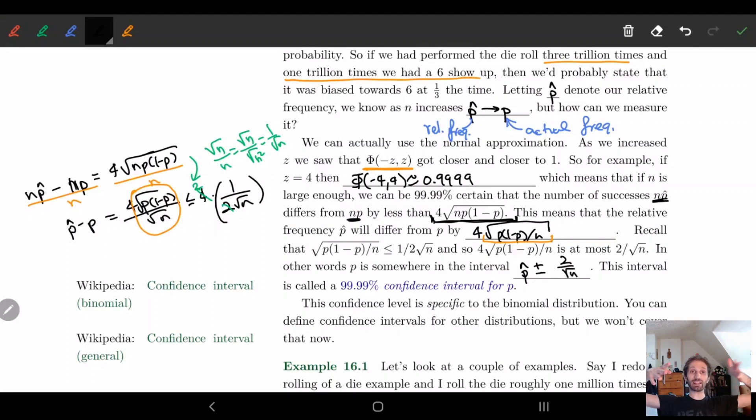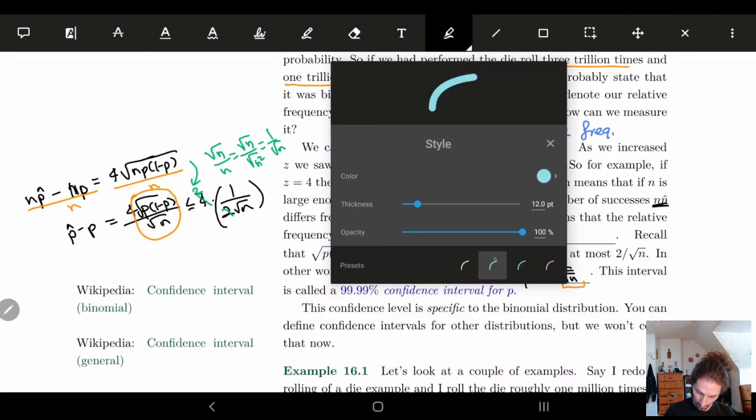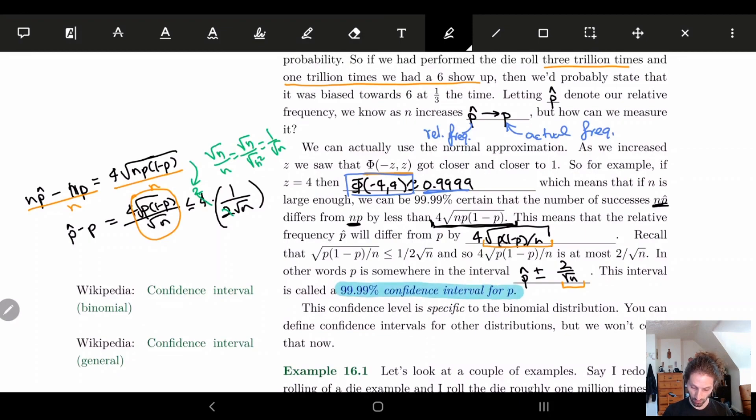So notice how as our n increases, then our confidence in this is going to be better. Our interval is going to get smaller, right? As n is getting bigger, this little thing here is getting smaller and we're going to be more and more confident that our thing is within a tighter range. So we're going to get closer and closer to our actual frequency. Now this interval, since we had chosen, remember here, we chose minus four, four, right? We chose z equal to four. Now because of this, we have a 99.9% accuracy on this. And so this is going to be called the 99.99% confidence interval for p. 99.99% confidence interval for p.